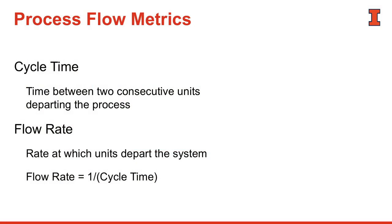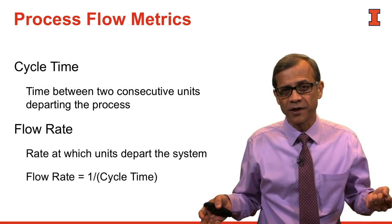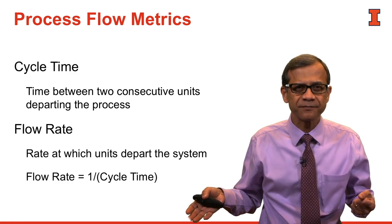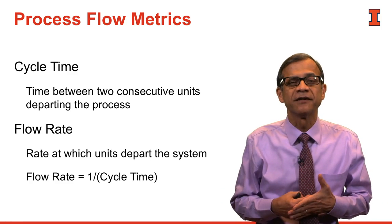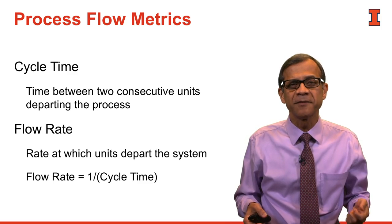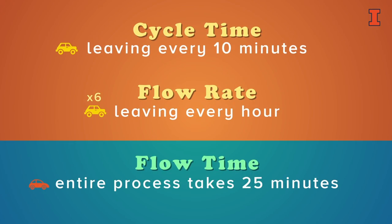We've now defined cycle time — the time between two consecutive units departing the process — and flow rate — the rate at which units are departing the system. Note that the flow rate is always equal to one divided by the cycle time. We also defined the flow time or throughput time: the time it takes a flow unit to go through the entire process.